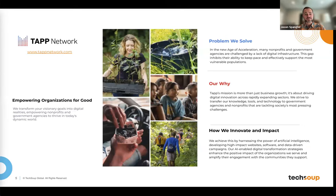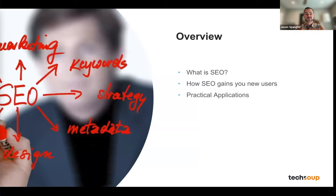TAP Network is a full-service digital marketing agency that has partnered with TechSoup for over eight years. Together, they've provided tremendous marketing thought leadership and expertise to thousands of members. Today we really want to focus on SEO and the impact it can have on your digital presence. The overview covers: what is SEO, how SEO can gain you new users and visibility, and practical applications.